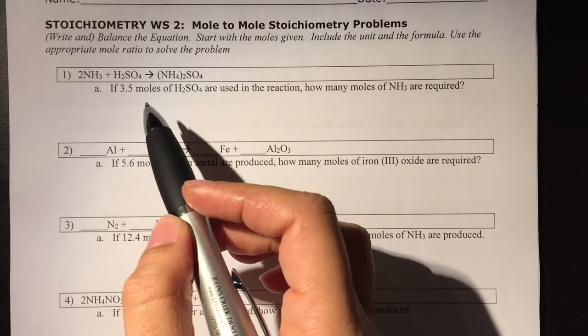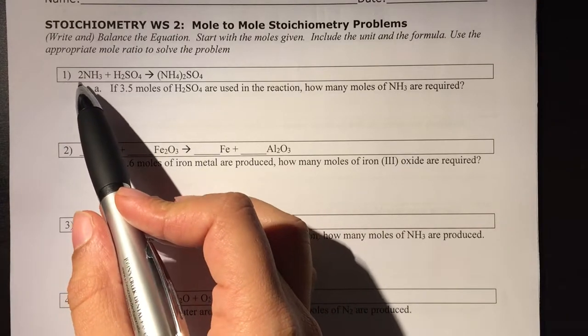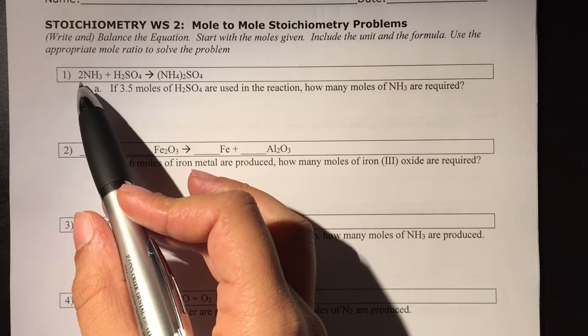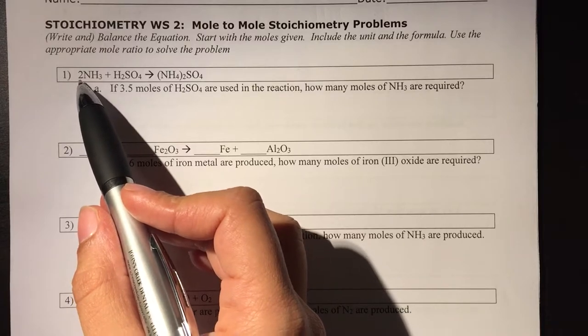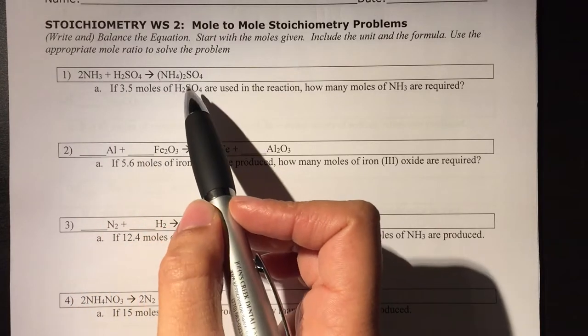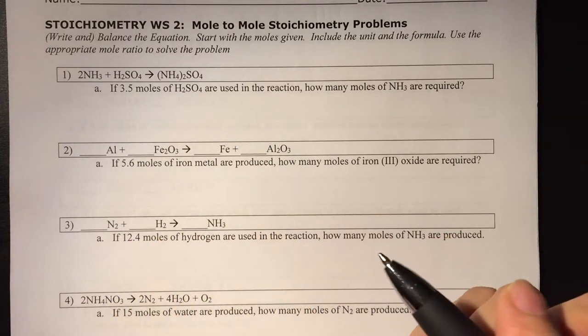So we're going to have to start by balancing our equation. And number one, it's already balanced for us. We can see that there's already a coefficient, which implies it's already been balanced, and even if we went to go check, we would see that I have two nitrogens here, I also have two nitrogens here. And if you continued so forth, you'd find everything to be balanced.